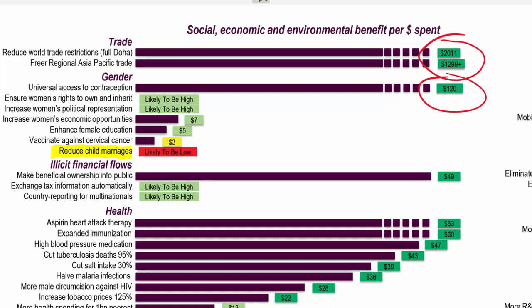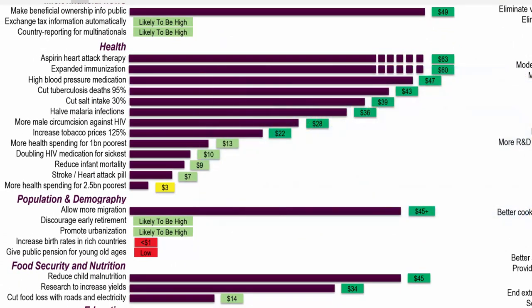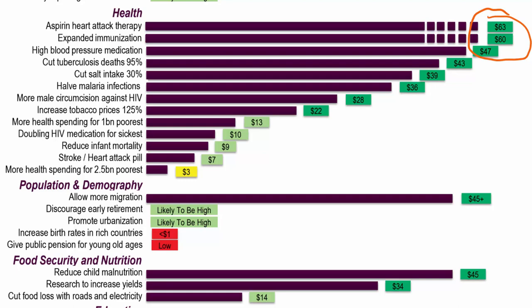Looking at health care investments: one thing that would really pay off is telling people to take a small aspirin every day to reduce heart attack risk — very cheap and easy, not much risk, but huge benefits. Saving money in health care, avoiding costs from people losing their jobs, and protecting the family support network when someone has a heart attack — all big payoffs. Expanding immunization should probably be done both because it's the right thing and because there are huge payoffs. Giving people high blood pressure medication returns about $47 for every dollar spent.